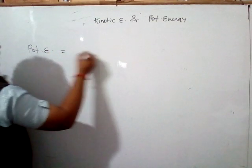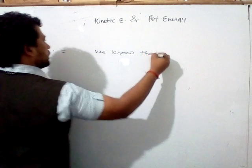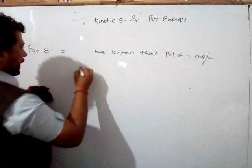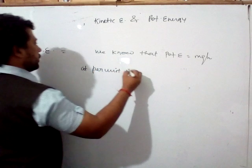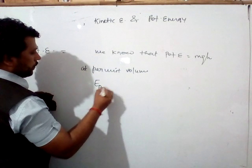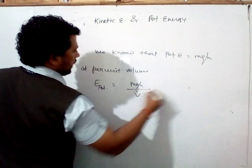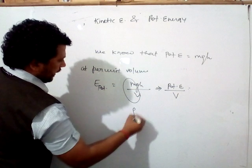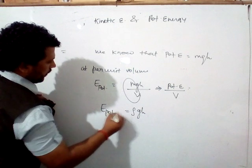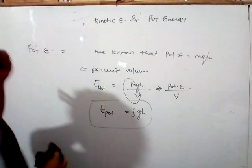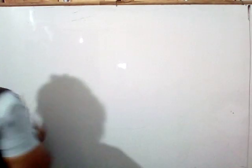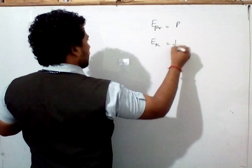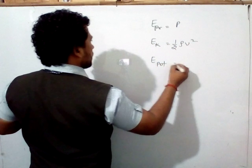Potential energy: we know potential energy equals mgh. Per unit volume, divide by V: mass upon volume equals density rho. So potential energy per unit volume equals ρgh. To summarize: pressure energy per unit volume = P, kinetic energy per unit volume = ½ρv², and potential energy per unit volume = ρgh.